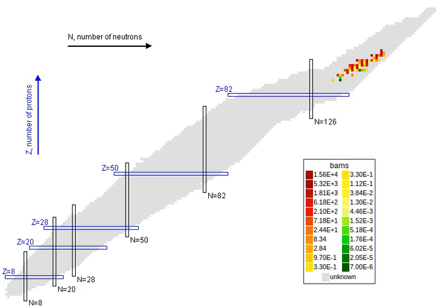The cross-section for neutron capture with emission of a gamma ray and the percentage of non-fissions are in the table.